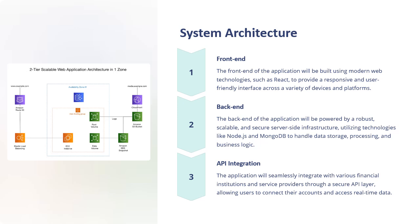Now let us see system architecture, which covers the front end, back end, and API integration. The front end of the application will be built using modern web technologies such as React, to provide a responsive and user-friendly interface across a variety of devices and platforms. The back end will be powered by a robust, scalable, and secure server-side infrastructure utilizing technologies like Node.js and MongoDB to handle data storage, processing, and business logic. The application will seamlessly integrate with various financial institutions and service providers through a secure API layer, allowing users to connect their accounts and access real-time data.